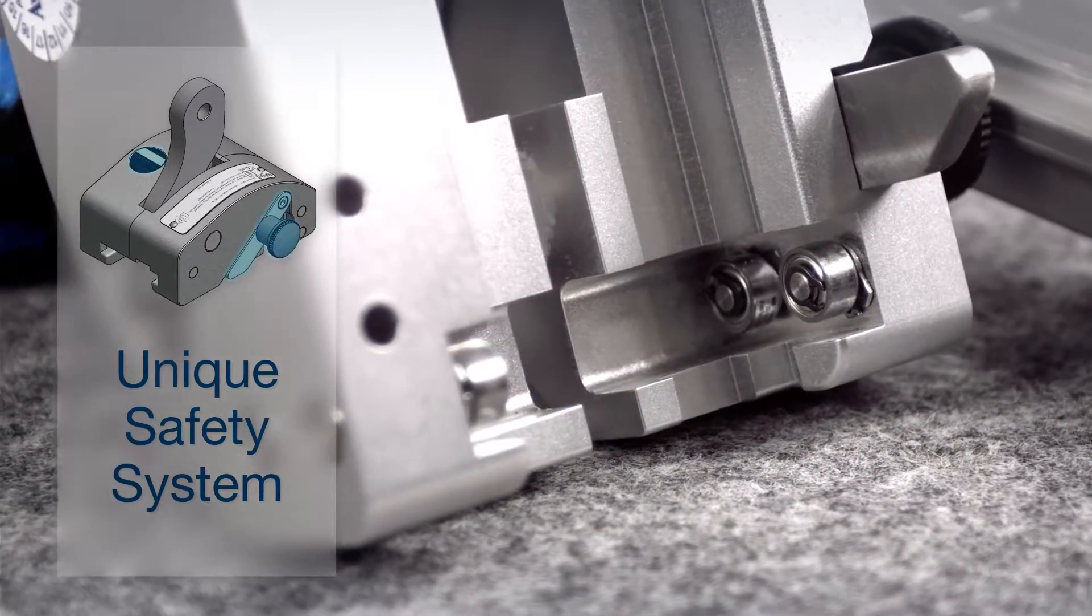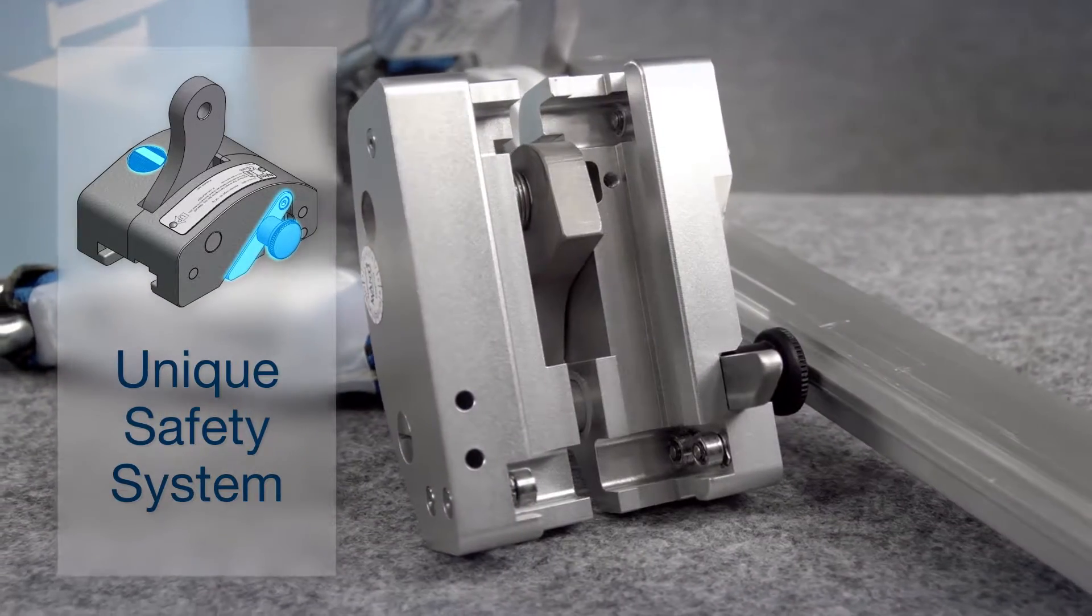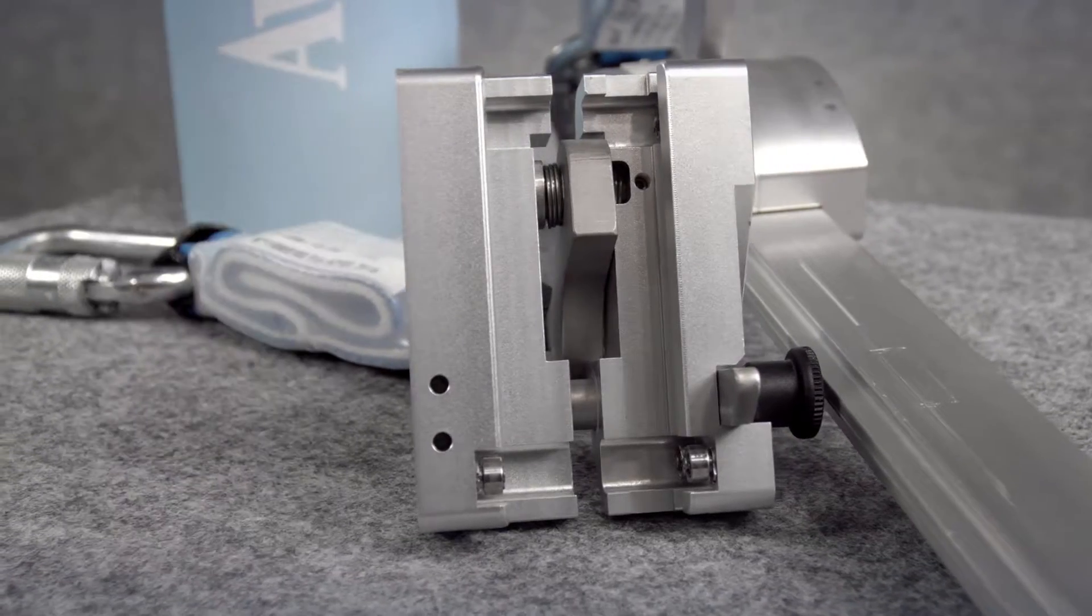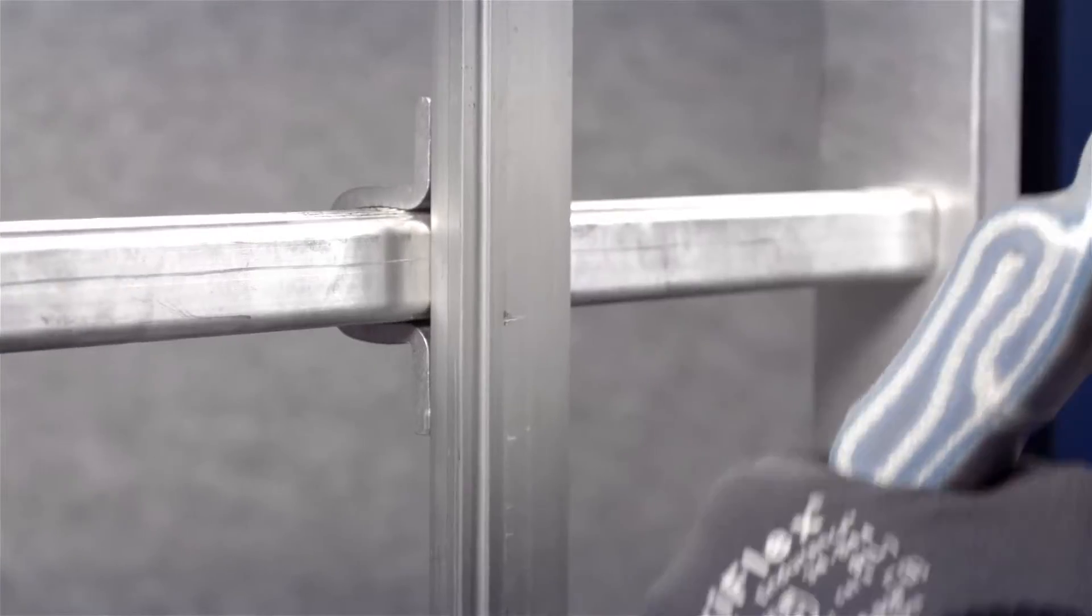The unique double safety locking system from Avanti ensures that the Eagle DS is always perfectly and safely mounted on the rail before and during the climb.